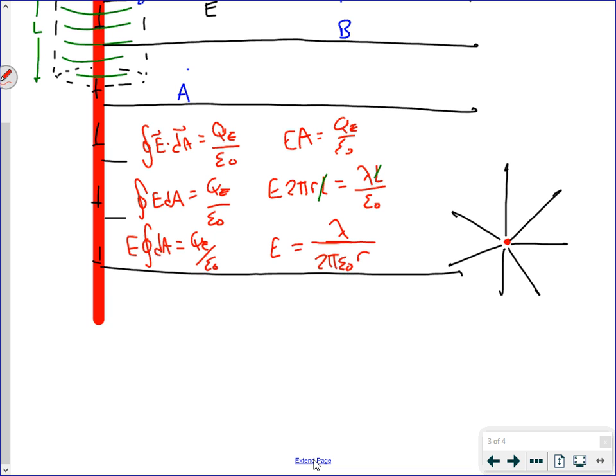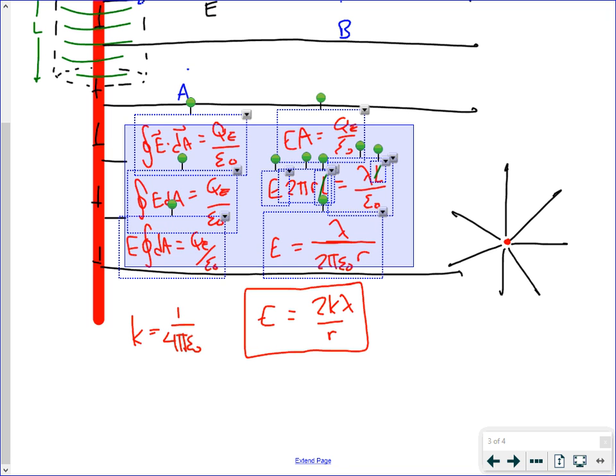If you want, you can write this, knowing that K is 1 over 4 pi epsilon naught, we have a 1 over 2 pi epsilon naught, so that's 2 K lambda over R. So one of those two ways is the way to go. I'm going to stick with this one. It's just a little less cumbersome to write. So there's a refresher in terms of derivation of electric field near this infinitely long stick.